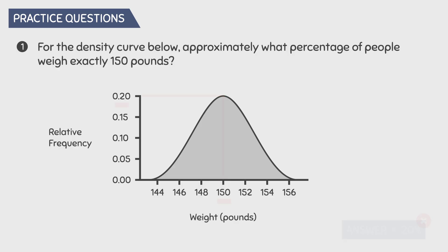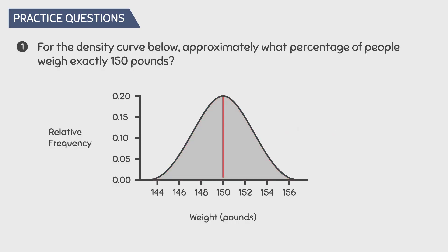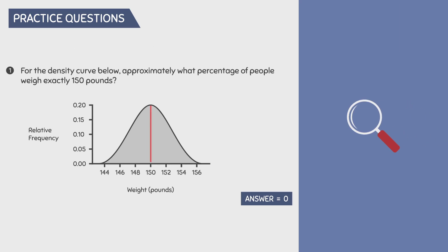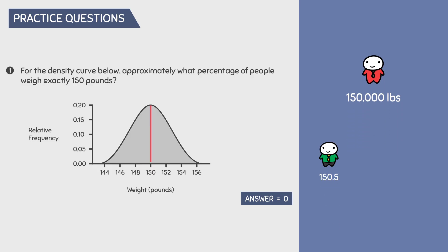However, this is incorrect. Remember that the total area of a density curve is always equal to 100%. This line definitely does not have an area of 20% — in fact, the area of this line is equal to 0, because a line has no width. As a result, the answer is 0. Logically, this makes sense because realistically, no one will ever weigh exactly 150.000 pounds — you'll have measurements very close to it, like 150.5, 150.70, or 150.05, and so on.